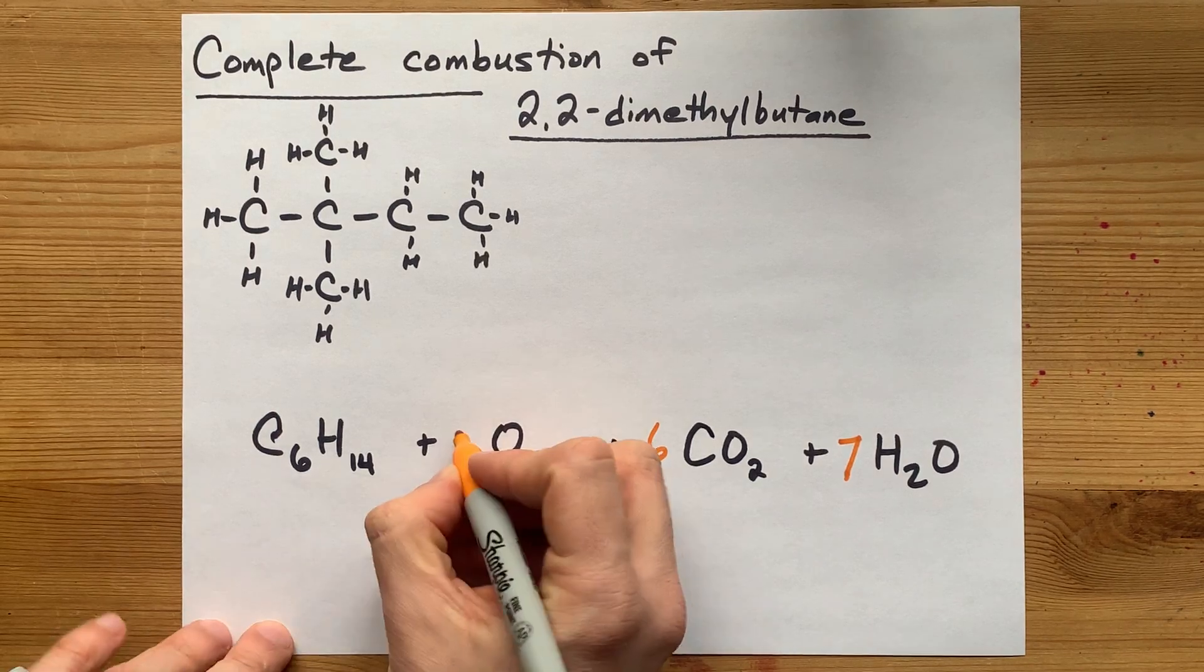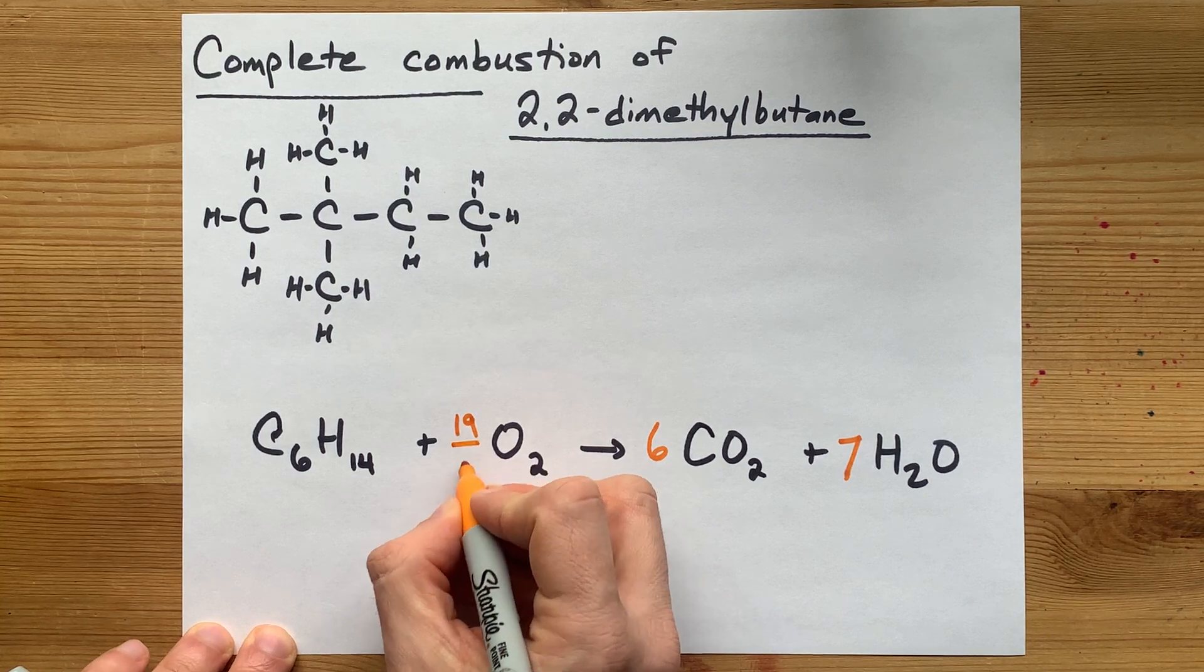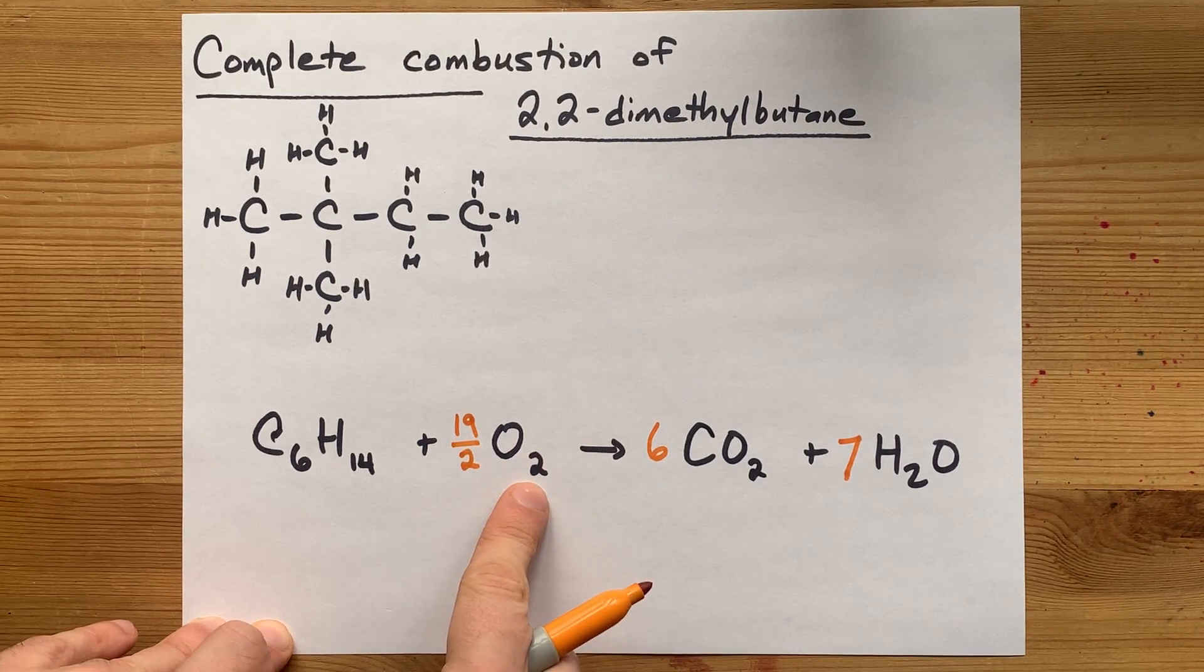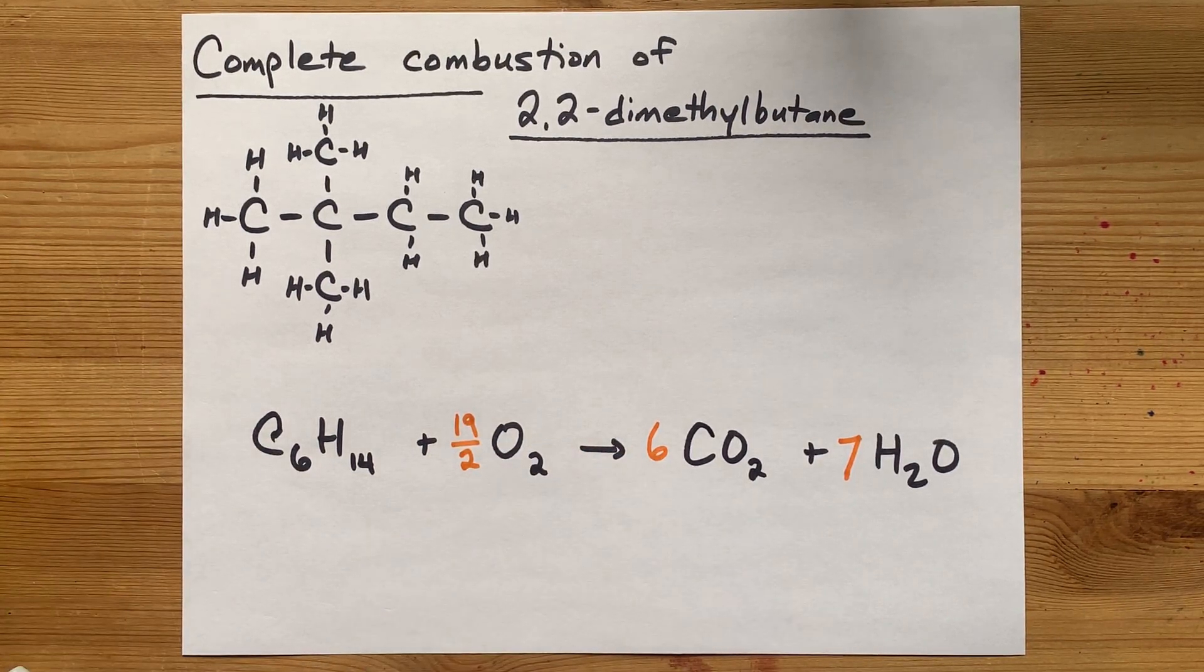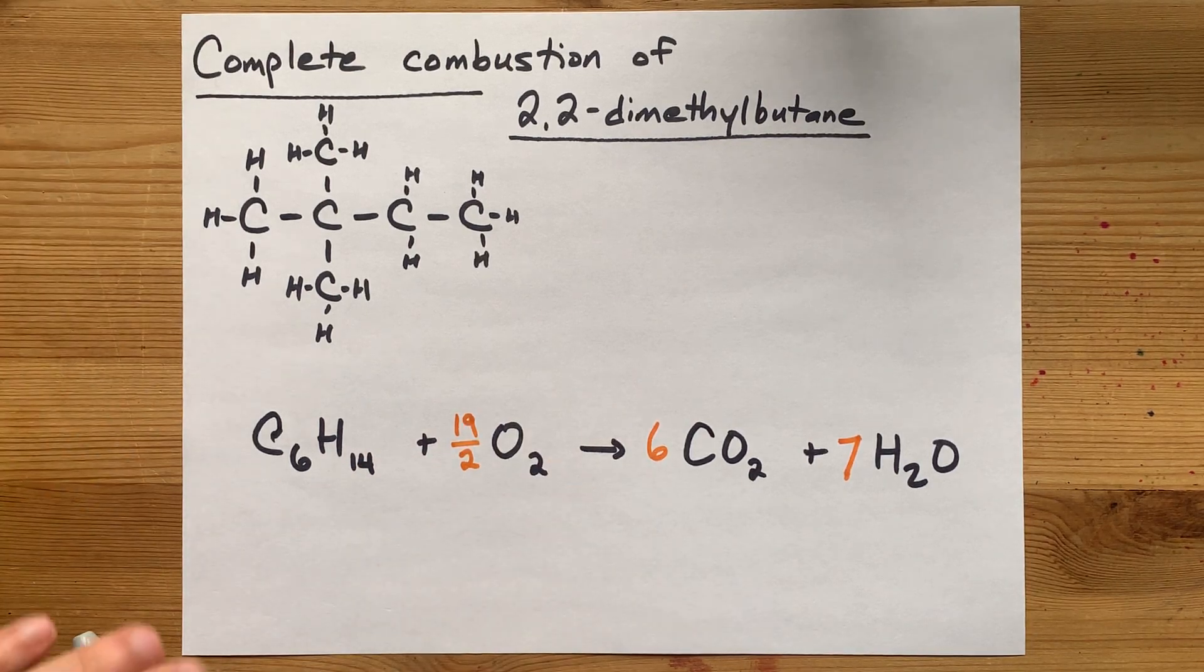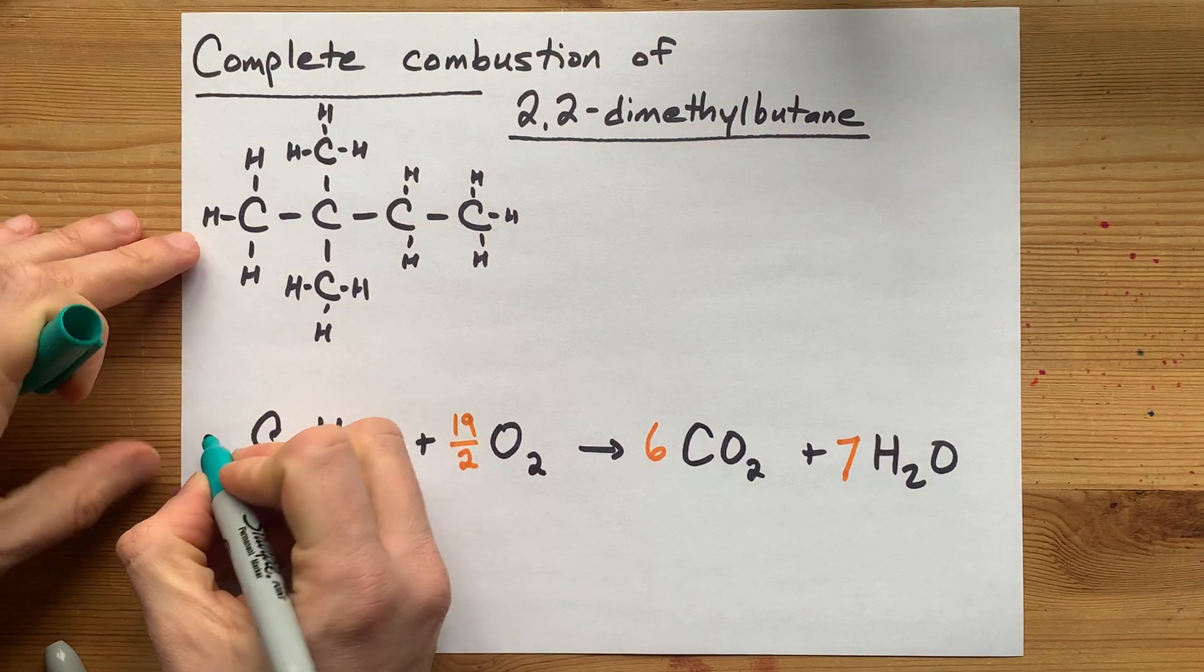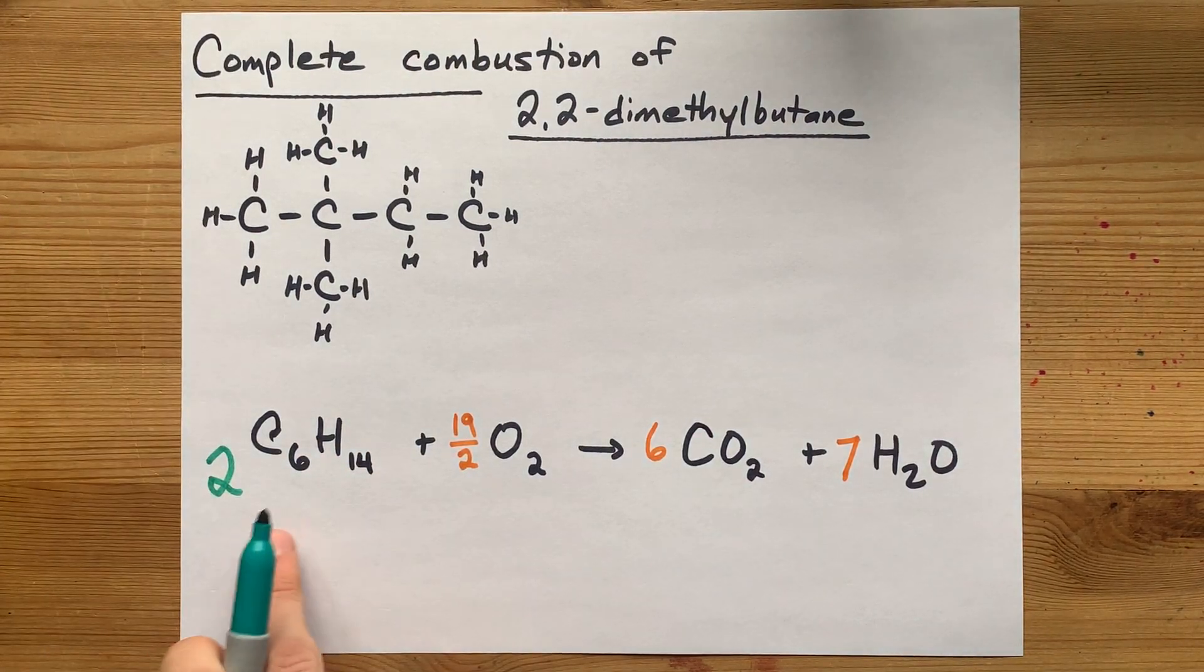One option for you is to do 19, the number you needed, divided by two, because that times the two for the number of oxygens you get in each pack is 19. But that's probably not ideal to look at, right? It's not visually pleasing. Whenever I end up with an odd number of oxygens on the right-hand side, my trick is to simply double all the coefficients that I currently have.